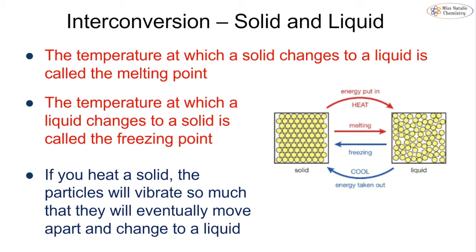Looking at interconversions between solids and liquids: the temperature at which a solid changes to a liquid is known as its melting point, and the temperature at which a liquid changes back into a solid is its freezing point. For example, water melts from solid to liquid at 0°C and also goes from water back into ice at 0°C. We call it the melting or freezing point depending on which conversion is taking place.